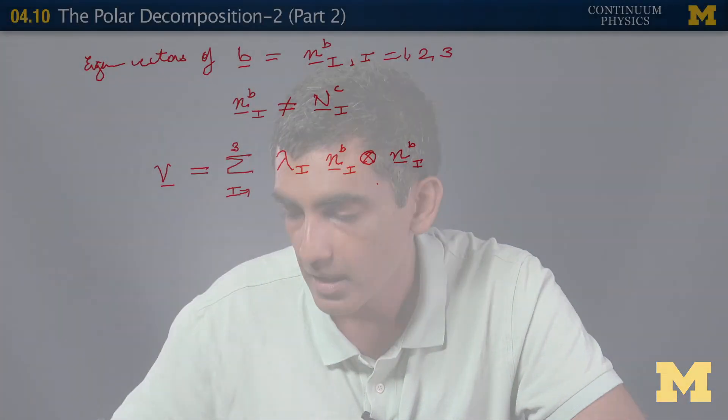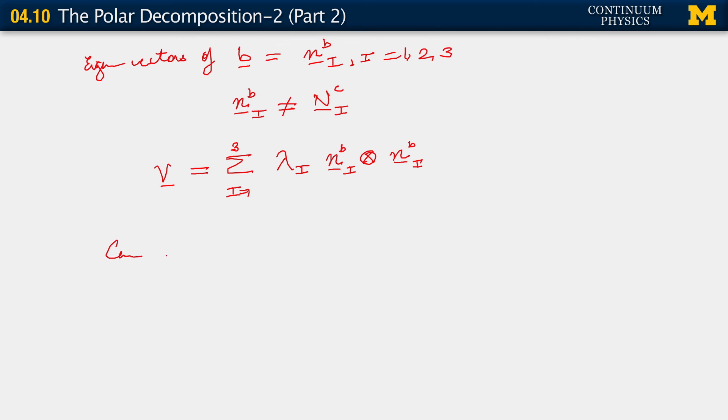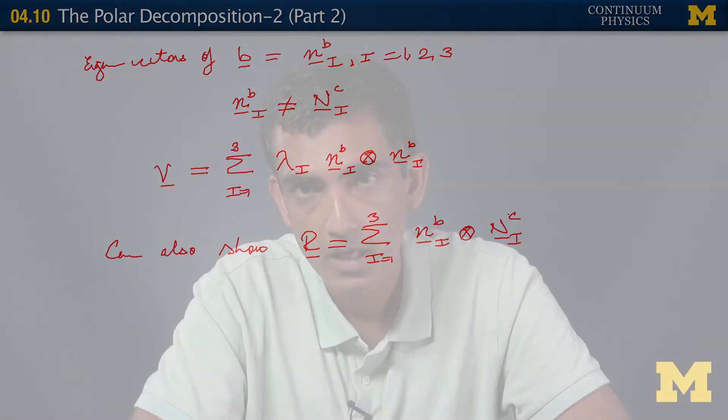Is there anything else I need to say here? Just one last thing. We're talking about how to write U, V, B, C in terms of these eigenvectors. Can also show the following. You may ask what about R? Why leave it out? Can also show R is the sum over i equals 1, 2, 3, little n i, each eigenvector of B, tensored with the corresponding eigenvector of C. That's sometimes a useful result. We're going to stop here for this segment, and we're sort of done with our study of the polar decomposition at this point.